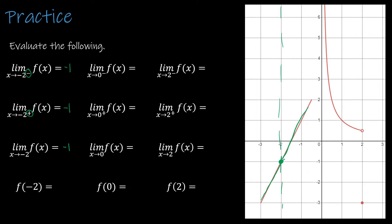The last question asks for the actual value of the function at that point, which is F of negative 2. That corresponds to where the closed circle is placed on the graph. F of negative 2 is in fact negative 1. So for this first set of questions, all three answers are negative 1.